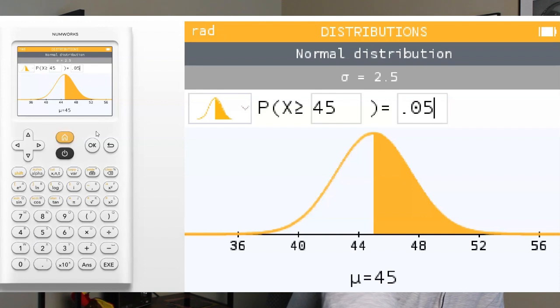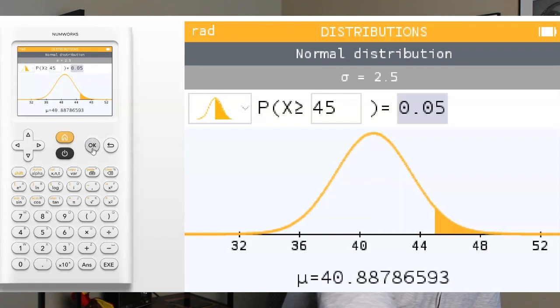Be careful if you don't put in 0.05, that's 50%. And then hit OK, and there's the mean. The mean is 40.888. And they show you the picture that has 5% above 45 feet, and again, it calculates the mean for you automatically. How cool is that?